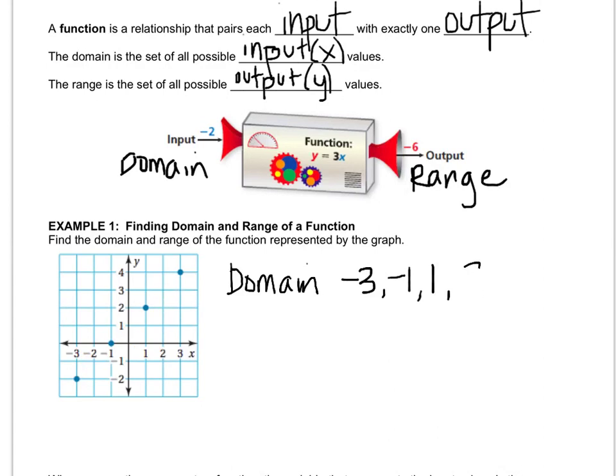So all of the x values are being represented by my domain. And I'm going to use these fancy parentheses. You might have seen them on the calculator before. It's kind of like an s, and then you do a backwards s. That's probably better than the one I did above. And that's how you write a set.